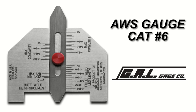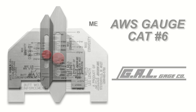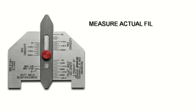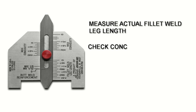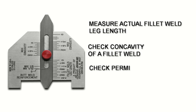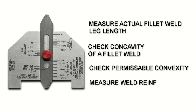The AWS gauge, or Automatic Weld Size Gauge, performs several functions similar to the Cambridge gauge. With this gauge, you can measure actual fillet weld leg length, check concavity of a fillet weld, check permissible convexity, and measure weld reinforcement.